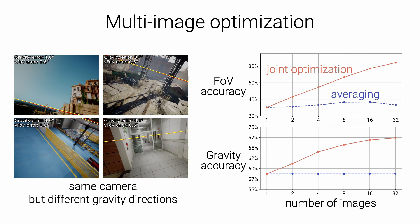Finally, GeoCalib can couple the optimization across multiple images. For example, images captured by the same camera share identical intrinsic parameters, which should be optimized jointly, while the gravity direction is different in each image. Unlike classical geometry tools, the images don't need to have any visual overlap. As shown by the red curves, this joint optimization improves the estimation of both gravity and intrinsics as more images are included. This would not be possible with a black-box neural network, which can only average the camera intrinsics over the images, and as shown in the blue curve, this is not beneficial.